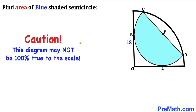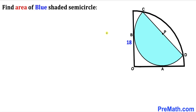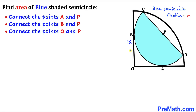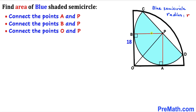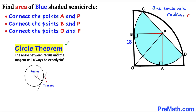Note that this figure may not be 100% true to scale. Let's get started. We'll assume that the radius of this blue semicircle is lowercase r. Now let's connect the points of tangency A and B to center P, and also connect centers O and P, as seen in this next diagram. Let's recall the circle theorem.